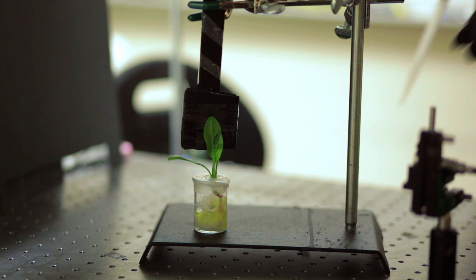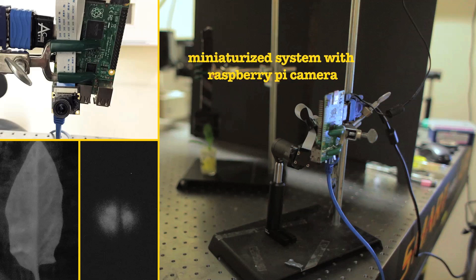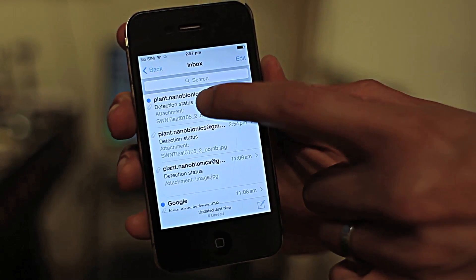To read the signal, the researchers shine a laser onto the leaf, prompting the embedded nanotubes to emit near-infrared fluorescent light. This light can then be detected with a cheap infrared camera connected to a Raspberry Pi, which is a credit card sized computer similar to the computer inside your average smartphone. Then, that tiny computer sends an email to the user, alerting them of this detection.